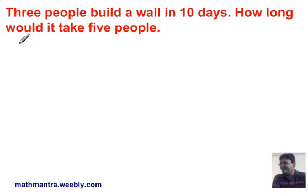Let's try and analyze the relation between the number of people and the number of days. So P and D, where P represents the number of people and D represents the number of days.